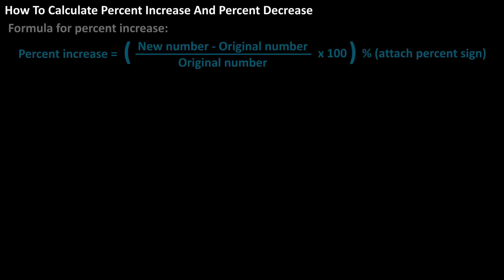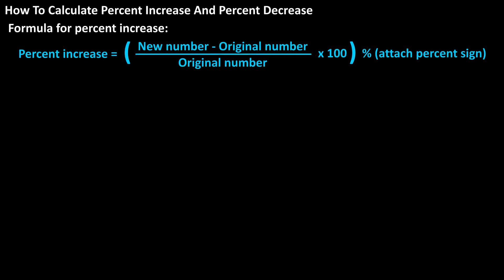The formula for percent increase is: percent increase equals the new number minus the original number, divided by the original number, times 100. Then we attach a percent sign for a final answer.